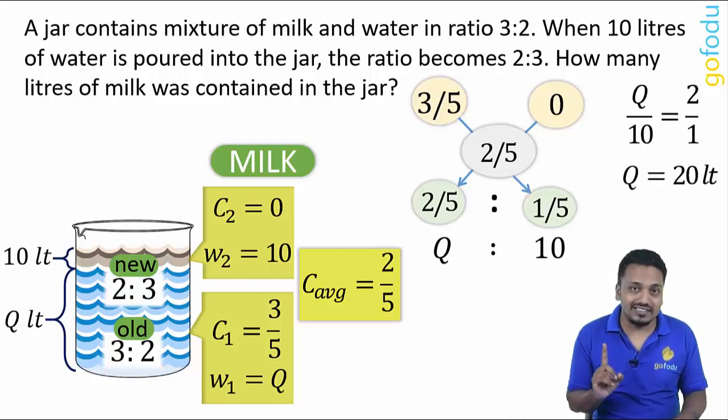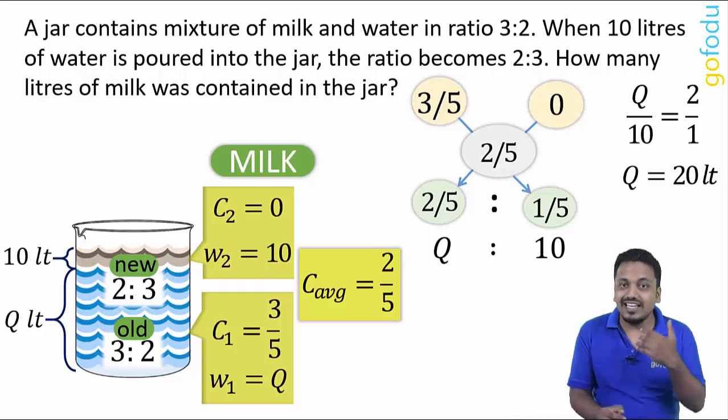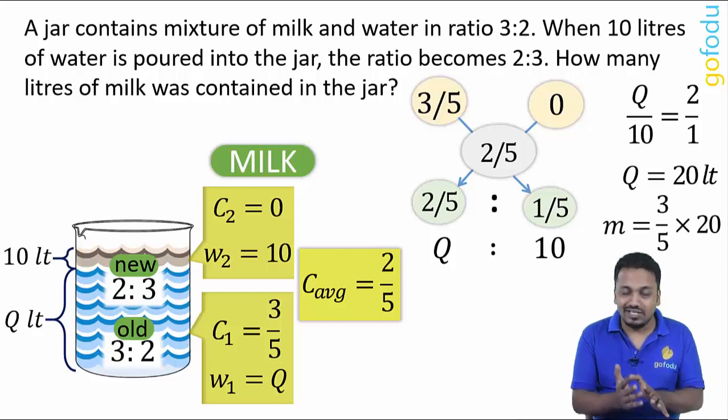But this is not the final answer. We want milk contained in the jar, that is initial proportion of milk into initial quantity. That will be 3/5 × 20 = 12 liters.